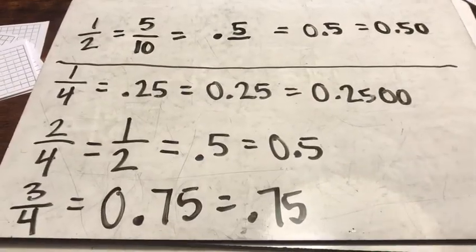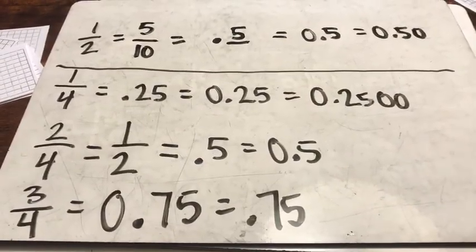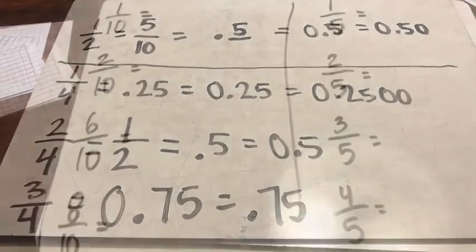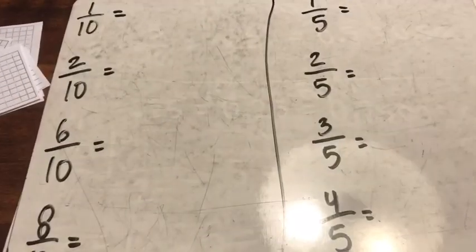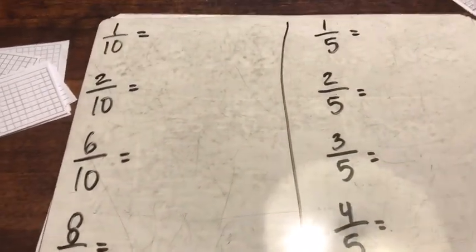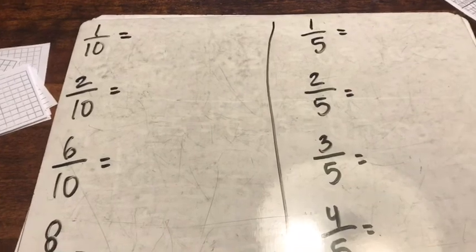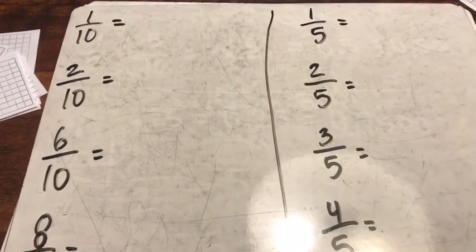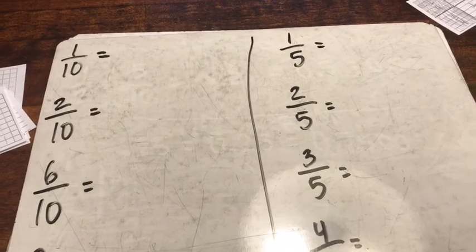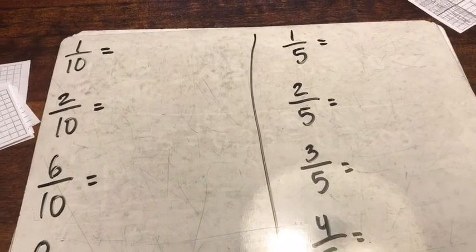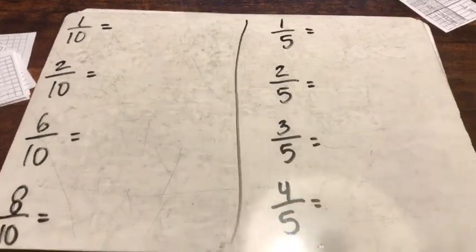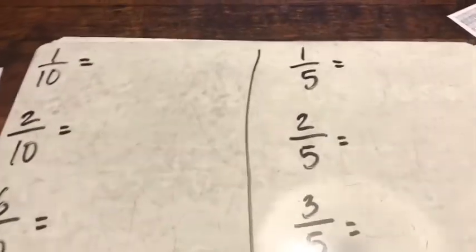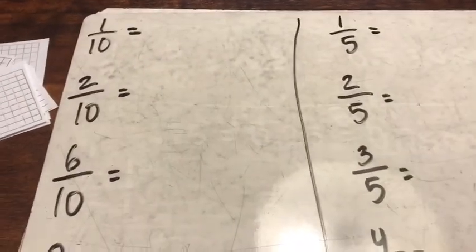Next we're going to do tenths, because it's easier, and then we're going to use tenths to help us with fifths. In fourth grade I usually go halves, then fourths, because I have the halves to get the fourths. Students also need to know fifths and tenths, but fifths are usually harder for them to see with my model, so I usually start with tenths.